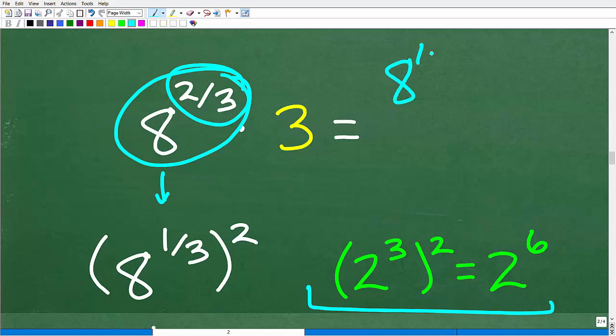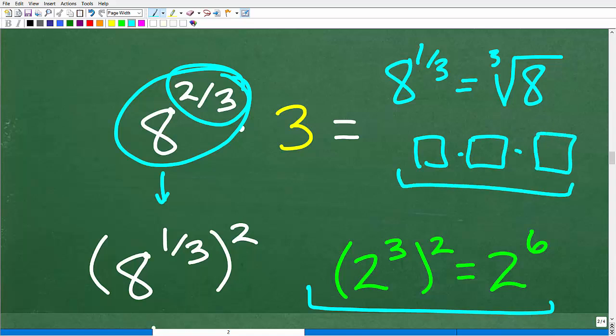8 to the 1/3 is the same as the cube root of 8. What does this mean? It means what number times itself three times gets us back to 8, and hopefully you're saying, hey Mr. YouTube Math Man, I know the answer. It's 2. Indeed, it is. So we know that 8 to the 1/3 is equal to 2. But here we have 8 to the 2/3. But maybe we can rewrite this in such a way where we can end up with 8 to the 1/3. And we can do that if we factor out this 2 in the numerator.